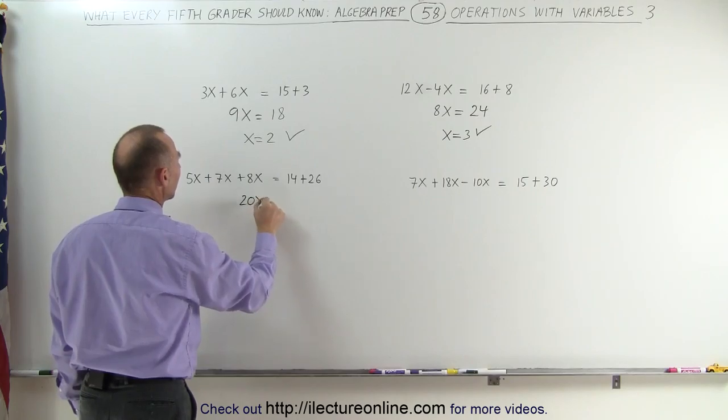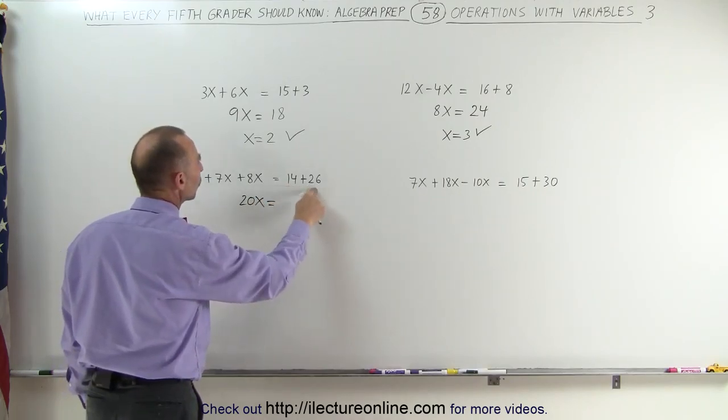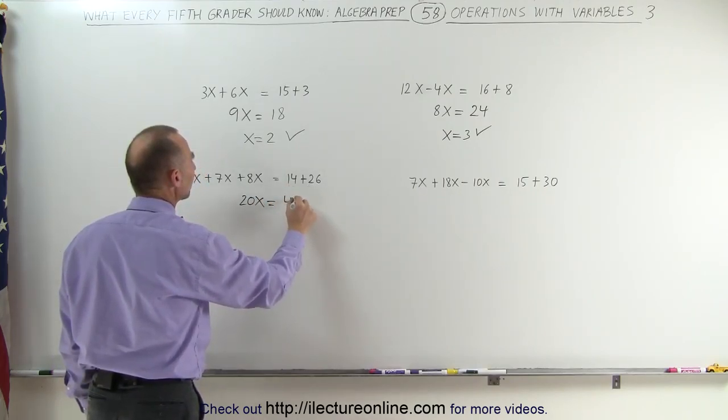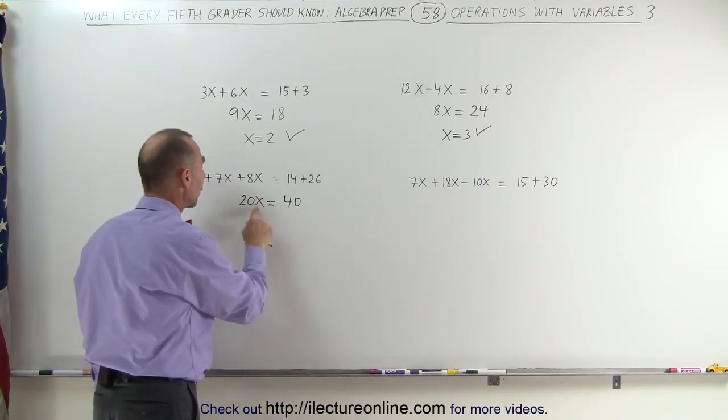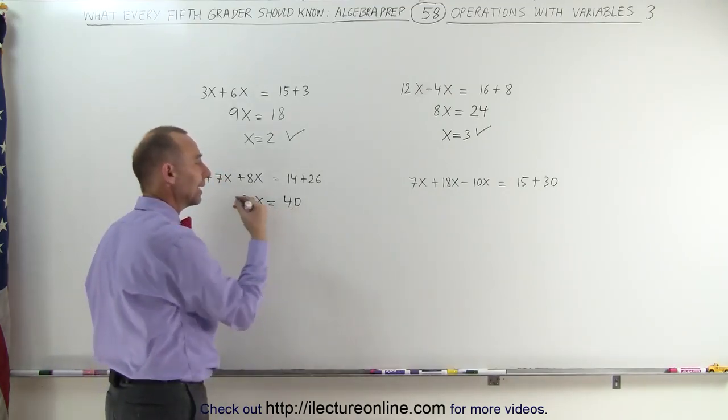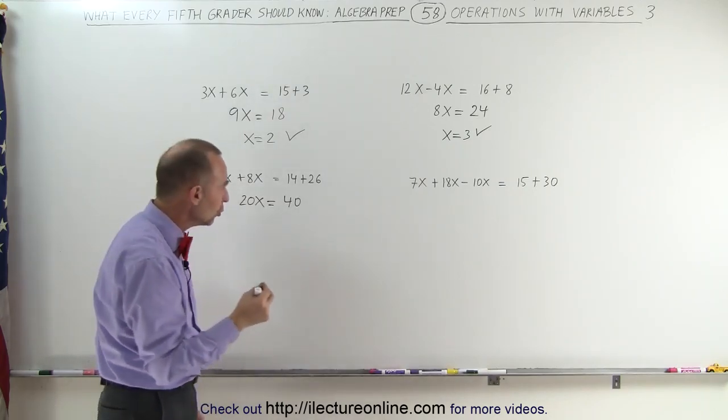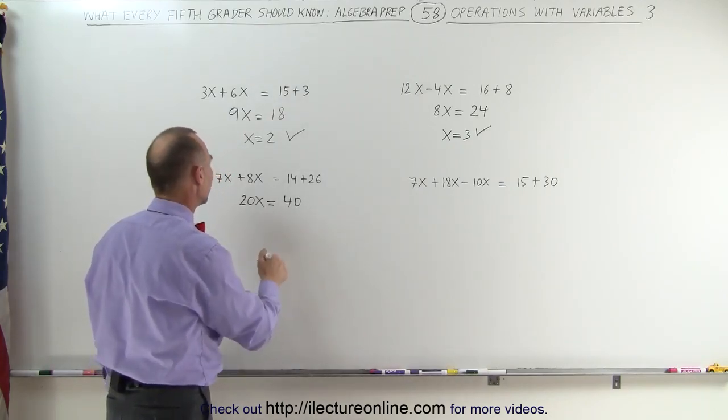On this equation here, let's add up all the numbers on the left side. We have 5x plus 7x, that's 12x, plus 8x gives me 20x. So we get 20x is equal to 14 plus 26, which gives me 40.